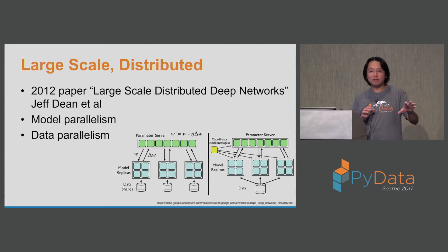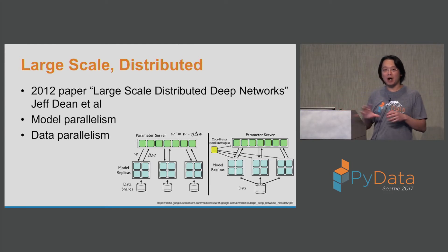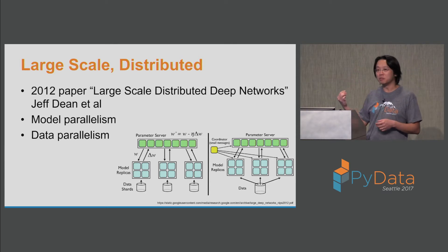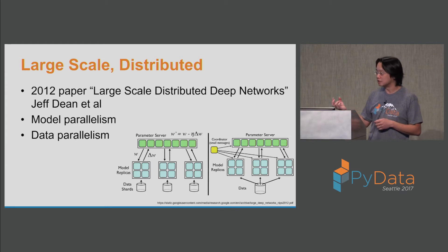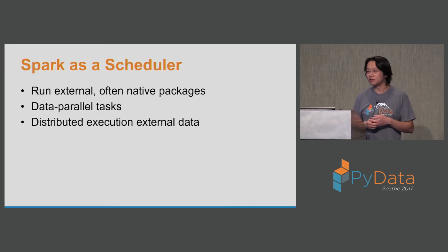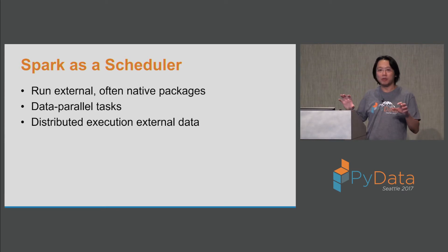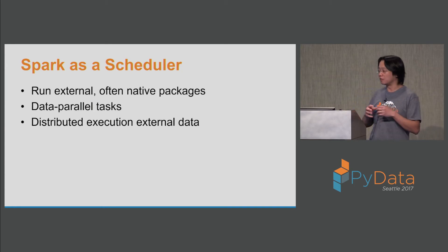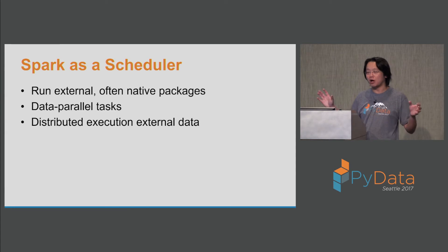All of this is inspired by a 2012 paper from Jeff Dean and others on large-scale deep learning. The key concept to extract is the idea of model parallelism versus data parallelism. Spark can be used as a scheduler — you take Spark, have your data, do transformations, and pipe it through other external native packages. You can use it for data-parallel tasks or for distributed execution training a model in parallel.